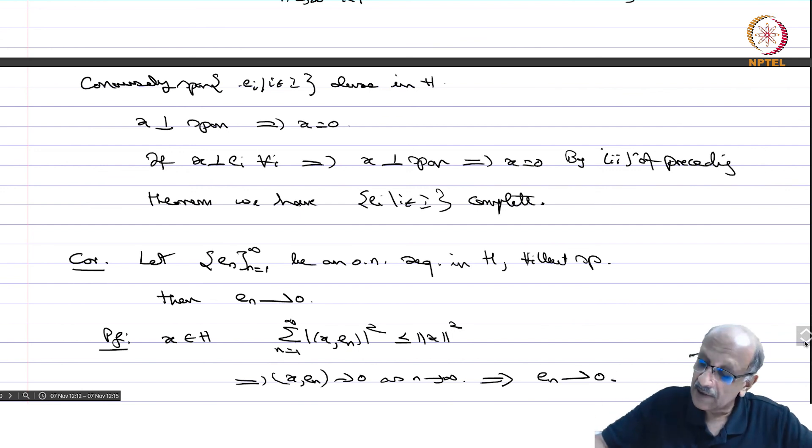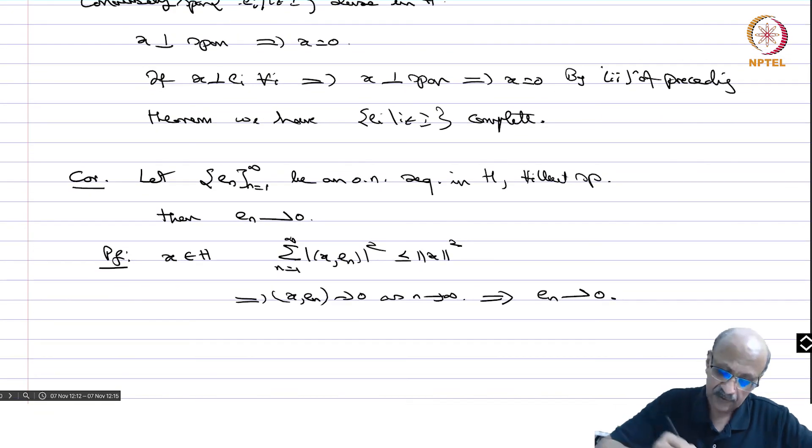This is another example, because you have norm e n minus e m is always root 2 if you have an orthonormal thing. So, no norm convergent subsequence but this sequence converges weakly to 0 and therefore, the weak and norm convergences are strictly different in the case of infinite dimensional Hilbert space. We will continue with this.